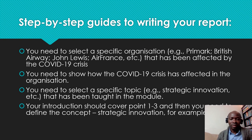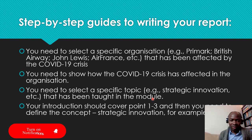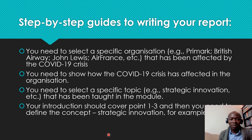What is key here is that when you're writing the assignment, you've been given the questions and then the very first step is to select a specific organization. That could be British Airways, it could be Air France, it could be John Lewis, it could be any company at all. So select a specific organization — one that has been affected by the COVID-19 pandemic. There are thousands and millions of organizations that have been affected, so you want to select one. That is the very first step.